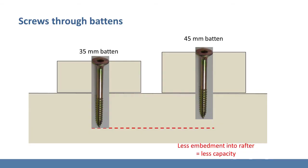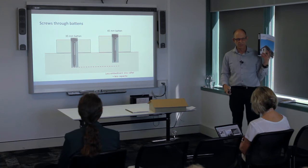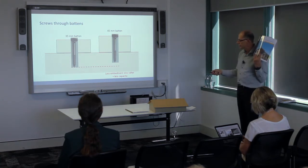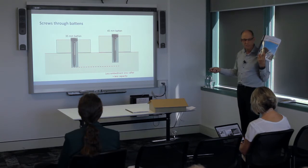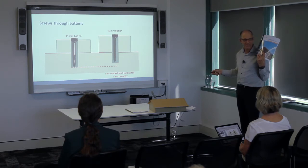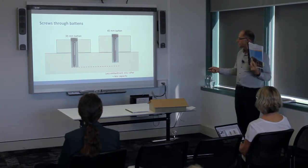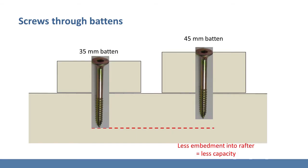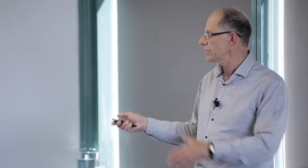Battens: we're seeing a large number of 45mm battens, but AS1684 gives us details for 35mm battens. If we look at a 75mm screw through a 35mm batten, that's the embedment into the rafter. Through a 45mm batten, the embedment is less — so the capacity is weaker. If we wanted the same embedment in a 45mm batten we'd need an 85mm screw, which you can't get. So we recommend using 100mm screws in 45mm battens — that way you don't have to think about it.